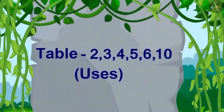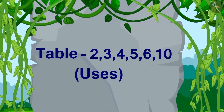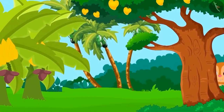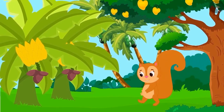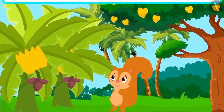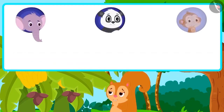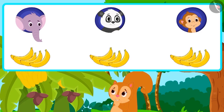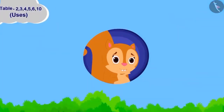Hello children, let's learn to use the tables. One day, a lot of fruits had grown in Chanda's garden. She thought, why not take four bananas each for her friends Appu, Golu, and Baban.